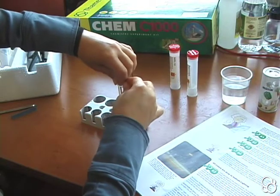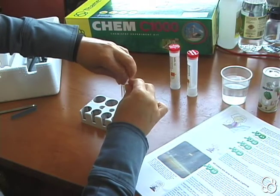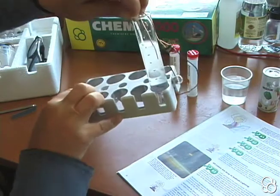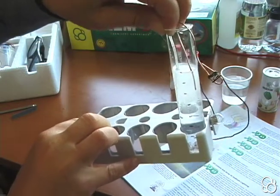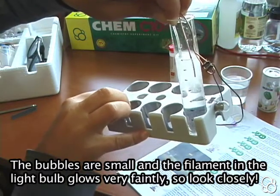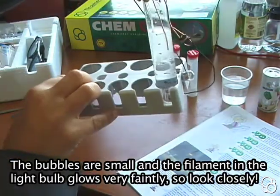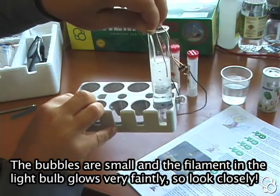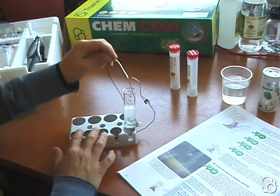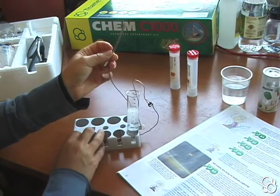You should see a very faint light coming from the light bulb. You'll also notice gas being produced inside the test tube, these white cloudy bubbles. When you take the magnesium strip out, you'll notice that it's been eaten away—it's dissolving the magnesium.